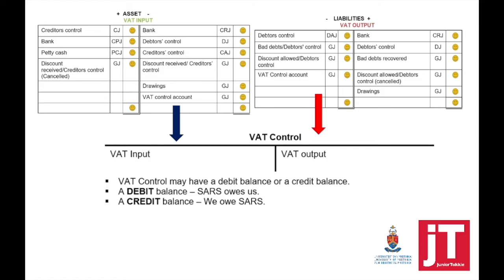Make sure that you understand them 100%. When we look at the end of the month, we're going to take VAT output and post it to the VAT control account, the same as with VAT input — it's posted to the VAT control account. Now we can calculate whether we owe SARS or SARS owes us. If we have a credit balance, it means that we owe SARS and it's regarded as a current liability. If we have a debit balance, it means SARS owes us — it's regarded as a current asset. VAT returns must be submitted bimonthly, which means every second month.